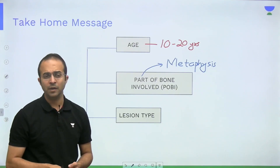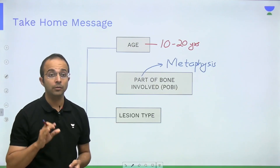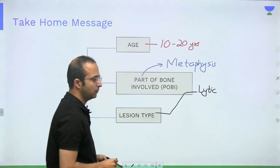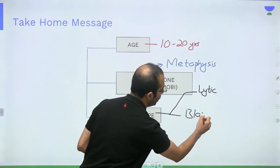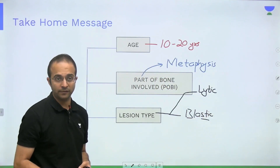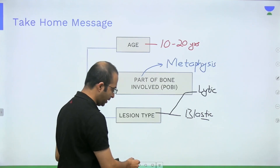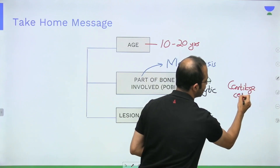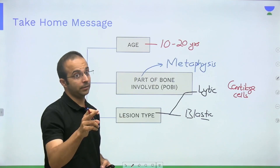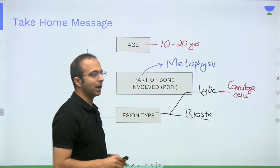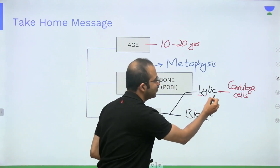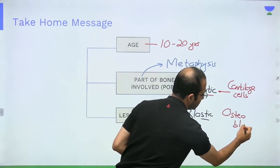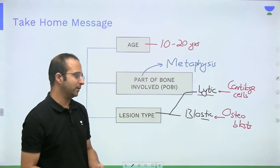Just a couple of tumors will be in the epiphyseal or diaphyseal areas — those you will memorize separately as epiphyseal tumors. Otherwise, maximum tumors are in the metaphysis. Regarding the lesion produced: either the tumor produces a lytic lesion — a blackish lesion on the X-ray — or a blastic lesion, which is a whitish, sclerotic lesion on the X-ray. Tumors in bone come from either cartilage-forming cells or bone-forming cells.